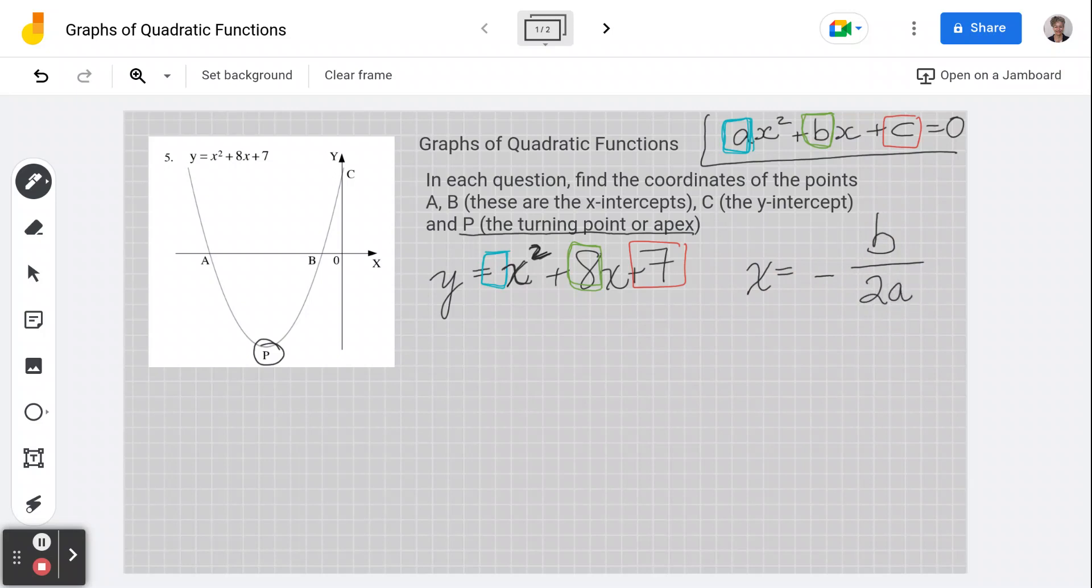We're just going to pop that in. So x, we're finding the x value of our turning point here. I'm going to make it a little higher, so I've got some room here. I'm going to do it over here. x equals negative b over 2a.